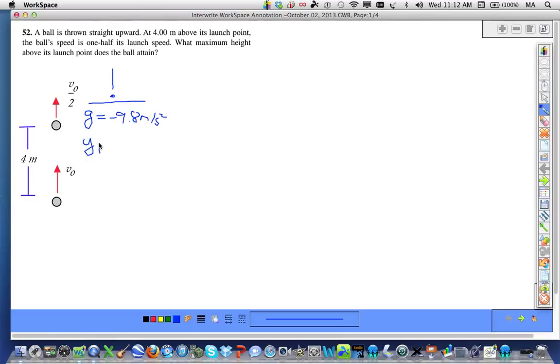Our final height in this problem, or at least this part of the problem, is 4 meters. The final velocity at a height of 4 meters is v-naught over 2. And I don't know what v-naught is, but that will be an unknown. But I do know that vf is half of v-naught.